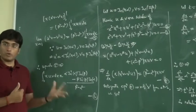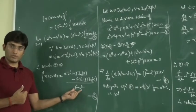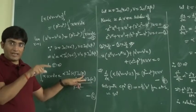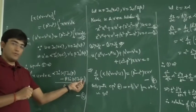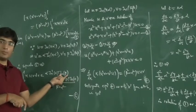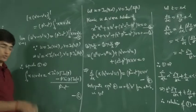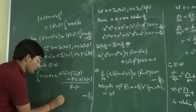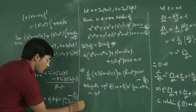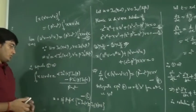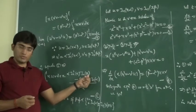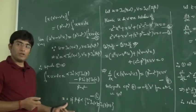Suppose β ≠ α, so the denominator is not zero. Since α and β are roots of Jn(x) = 0, both Jn(α) = 0 and Jn(β) = 0. Therefore the numerator is 0, and hence the value of the integral is 0. This is the first part of what we had to prove.